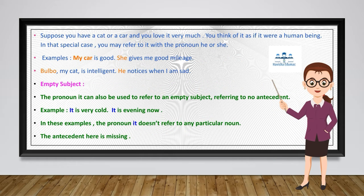In a special case, if you have a cat or a car and you feel very attached to it — treating it almost like a human being — you can use 'he' or 'she' instead of 'it'. For example: 'My car is good. She gives me good mileage.' We use 'she' because we think of it as a human being. Another example: 'Bulbo, my cat, is intelligent. He notices when I am sad.' Here 'he' replaces 'Bulbo'. Normally we should use 'it', but this is a special case.